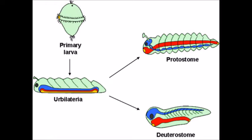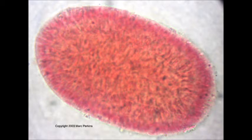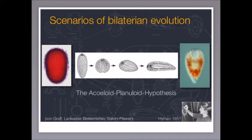When we ended the last video, we pointed out that the Urbilaterian was an acoelomate, worm-like animal. Looking at the phylogenetics, we see that acoelomate animals, which are bilaterally symmetrical, are only slightly more derived than Cnidarians, which are generally radially symmetrical. However, Cnidarian larvae, called planula, are bilaterally symmetrical, ciliated, flattened, unsegmented animals. It would appear that such an animal gave rise to the bilaterians according to the planuloid-acoeloid hypothesis.